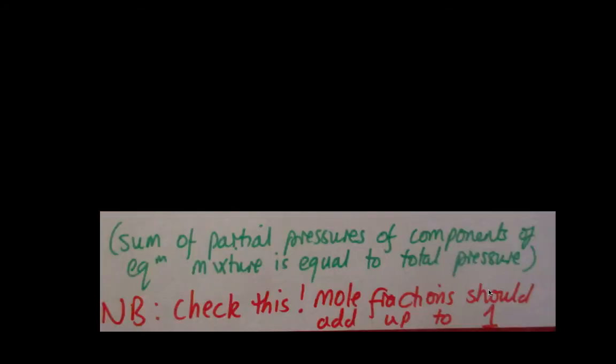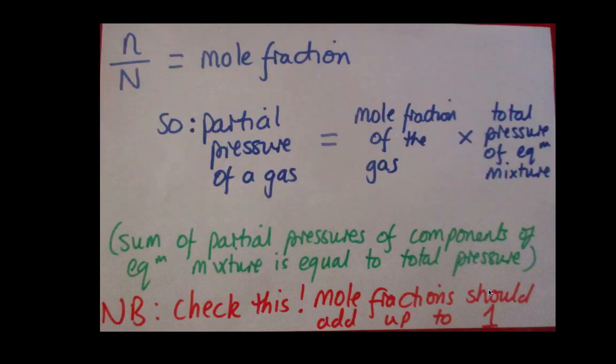Now, the other way round also works. So, if you think about it, the sum of all of these partial pressures of the components in a mixture will equal the total pressure. And so, a check that you can do after any calculation like this is simply to add up the mole fractions and check that they add up to one. If you're dividing things up into different fractions, those fractions should come back together again and make one.